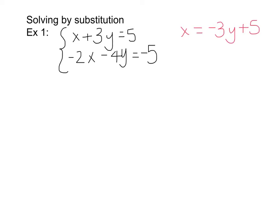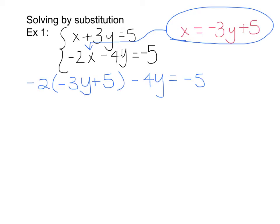After you have your first variable solved for, you are going to take what x equals and substitute it in for x in your second equation. I took what x equaled, which was negative 3y plus 5, and substituted it in the place of where x was. After you've substituted, the variables in your equation should only be one variable, which is good — I only have y's now.